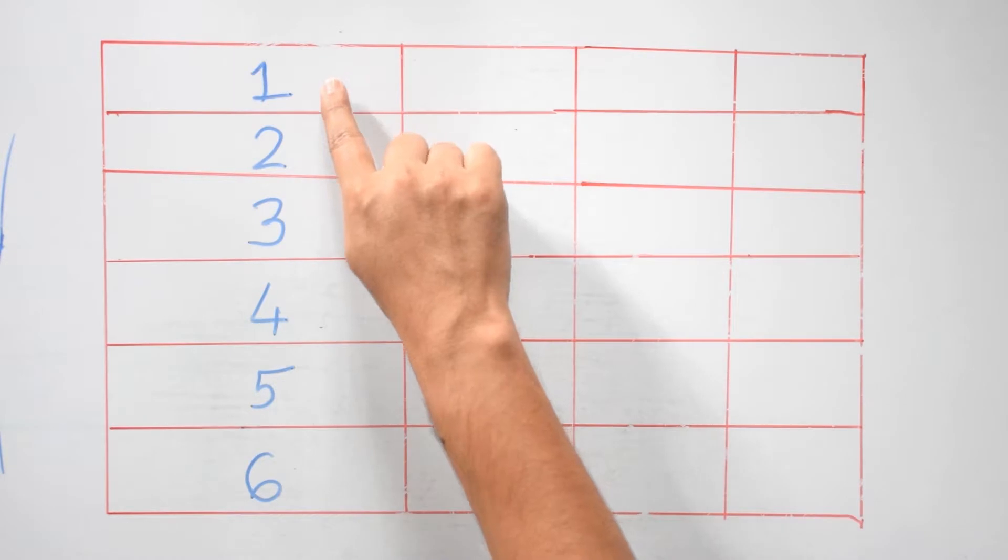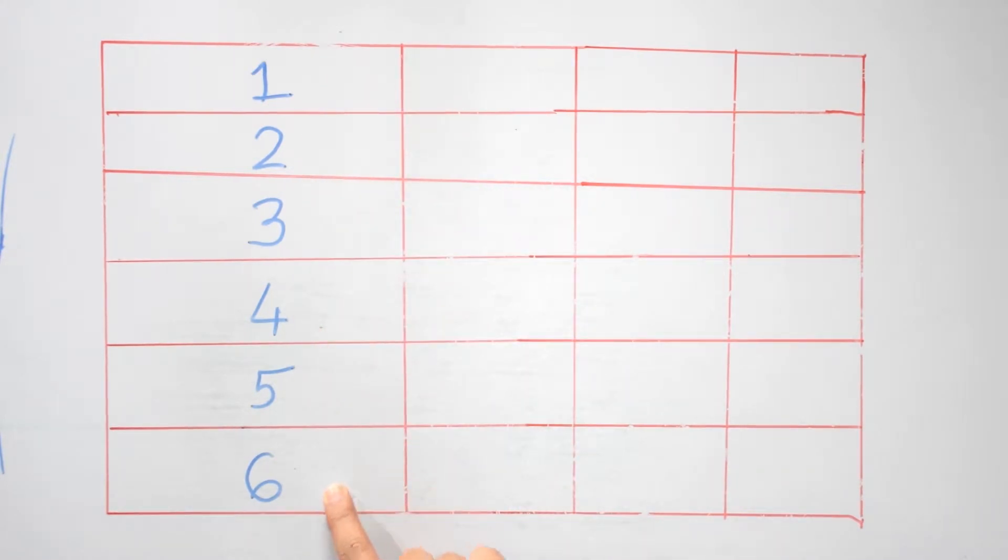Let us take numbers from 1 to 6 and try to arrange them in groups. For this we will follow two rules. First, each group should have equal number of seeds, and the second rule, each group should have more than one seed.